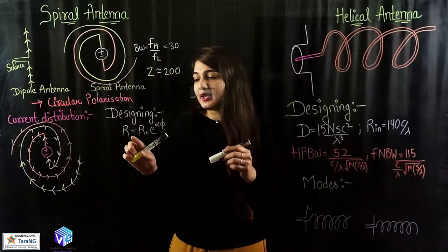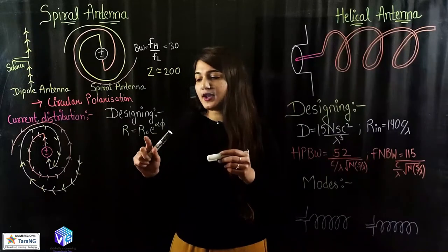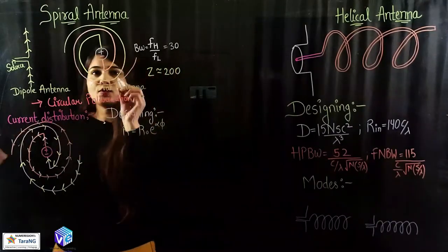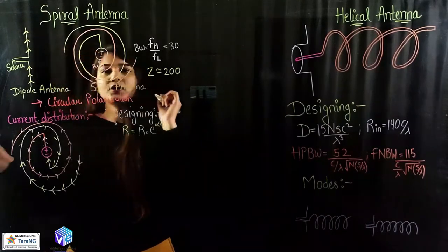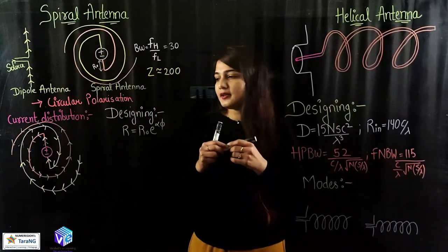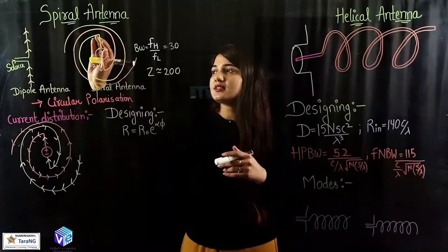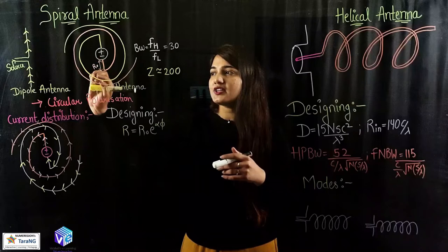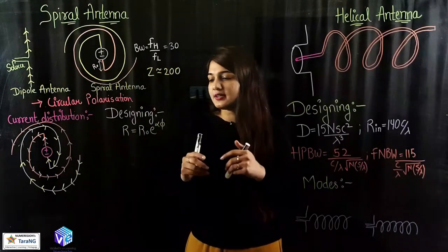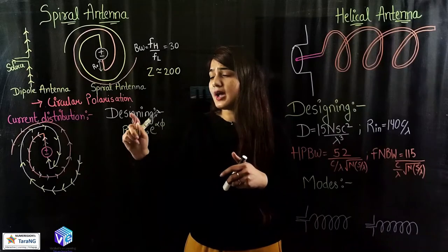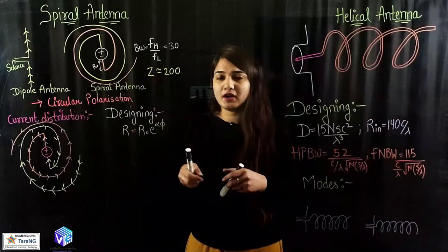Coming to the designing: R is equal to R₀ e raised to the power alpha phi. Here R₀ is the minimum radius. Alpha is the ratio in which these circularly turned edges are increasing — it is the amount by which they are increasing. So I can find out R at any point; we can find the radius at any point with the help of this formula.